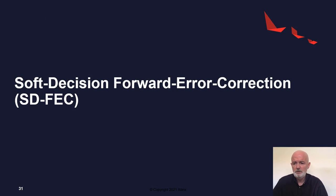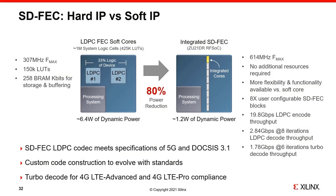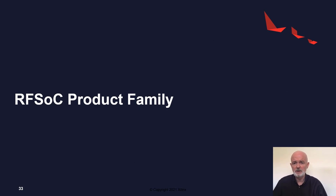The third class of hard IP block is the SDFEC — soft decision forward error correction. All modern communication systems have errors, so forward error correction is needed for reliable data reception. The SDFEC is programmable and can decode either LDPC or turbo codes, supporting all common standards for 4G, 5G, and DOCSIS modems, with the ability to construct custom codes as standards evolve. Multiple SDFECs are supported in single devices to handle multiple channels. A key differentiator is the significant power savings from hardening this block and the FPGA fabric resources freed for other baseband processing.